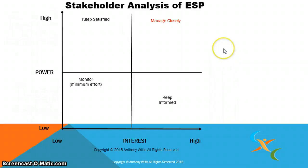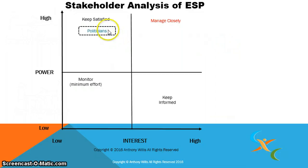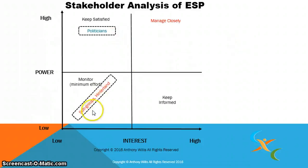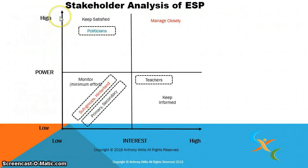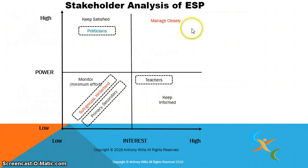Now, this is my analysis — you may or may not agree with it. Politicians: keep them satisfied, they want to look good to get more votes. Subgroups in the hinterland and so on require minimum effort — monitor their involvement. Students — primary and secondary school students — are placed in one section, and teachers in another: keep them informed. Here you can see the politicians have the most power, high up on the power scale, and they have interest.